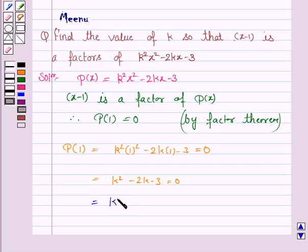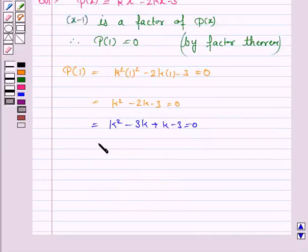So now we factorize this: k²-3k+k-3=0. Taking k common from the first two terms we have k(k-3)+1(k-3)=0.